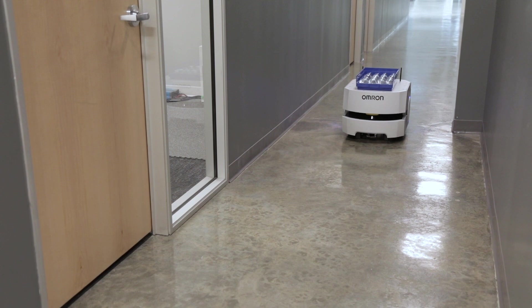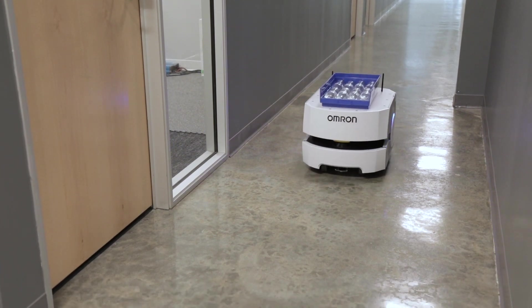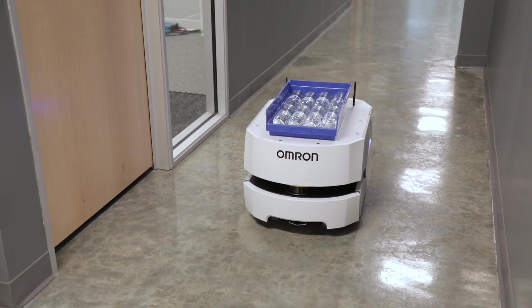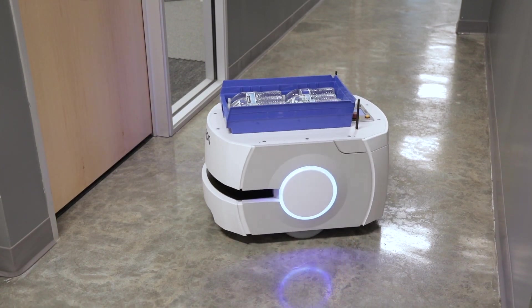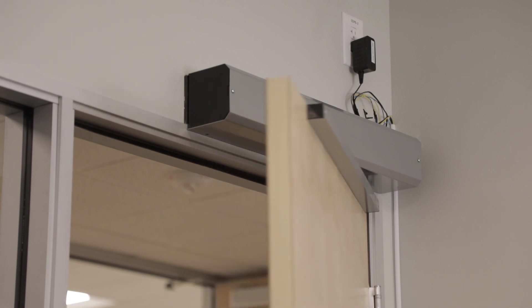Here, there is an automatic door between where the AMR is now and the goal. Once the AMR comes near the door, the Mobile I.O. Box will receive a signal from the fleet manager and open the door.